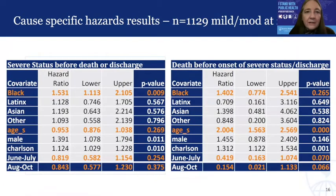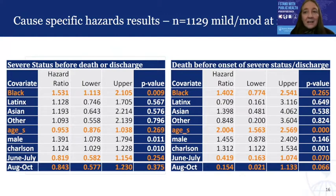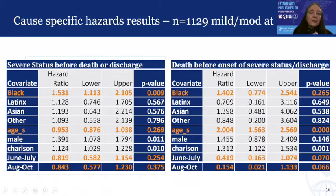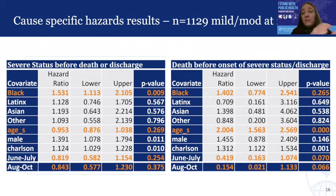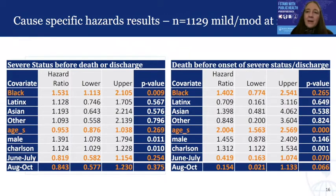I'll show you an example using the Johns Hopkins Hospital COVID-19 data up until the end of October. This is the result of implementing a Cox model with careful definition of censoring among 1,129 individuals who were in the hospital but still of mild or moderate status at 24 hours. We're going to compare the cause-specific analyses for two competing events: progression to severe status before death or discharge, and death before onset of severe disease or discharge. To be complete, a third analysis for discharge before progression to severe disease or death would also be needed.